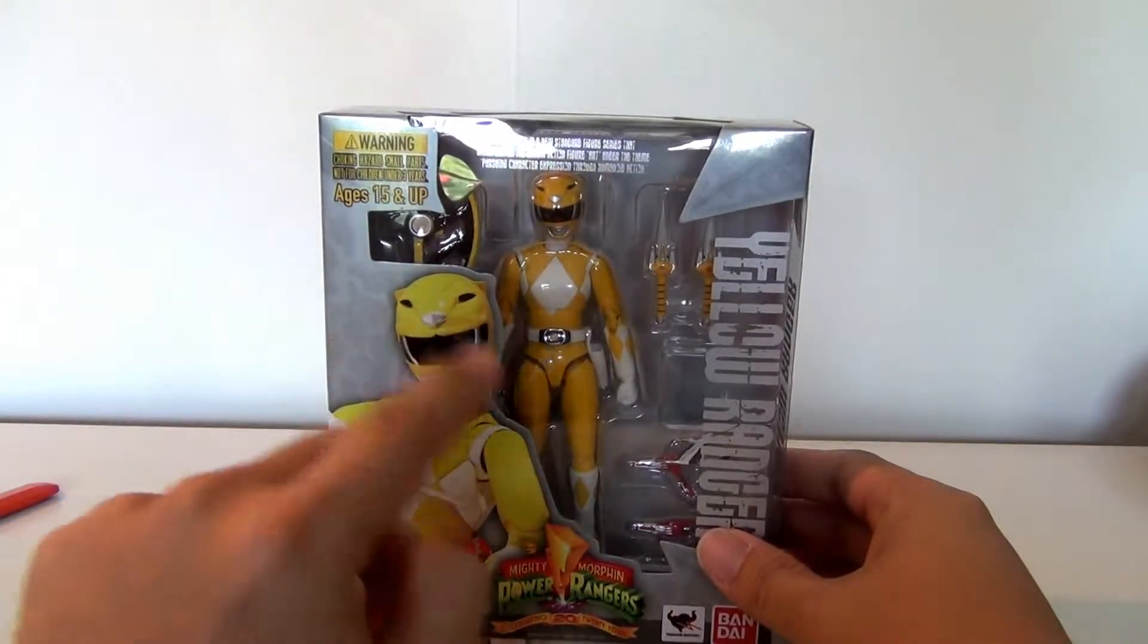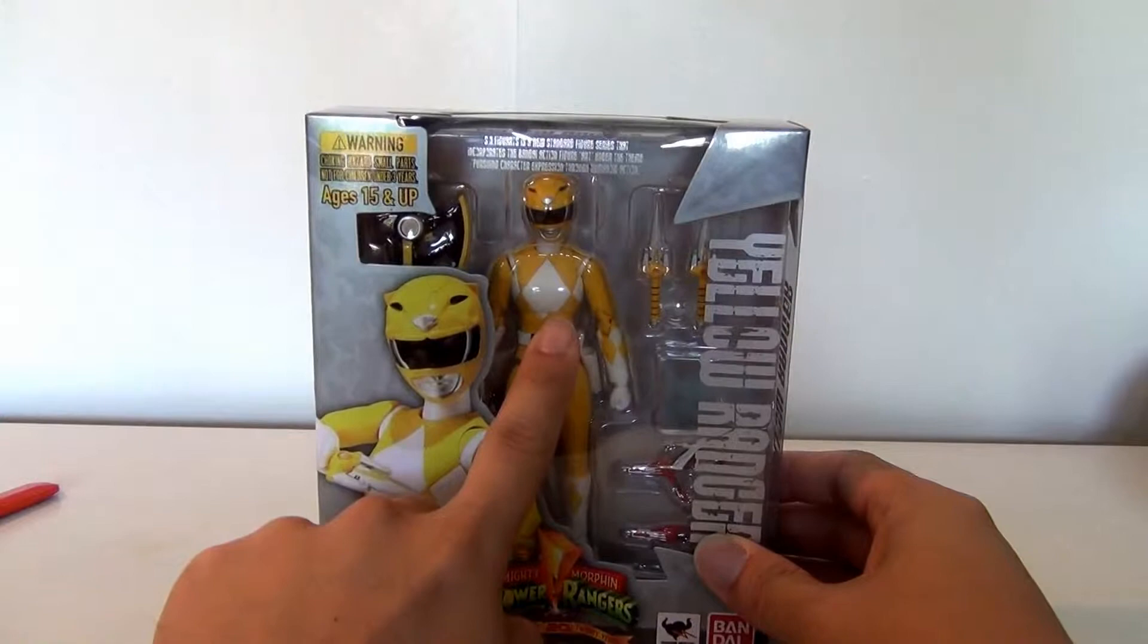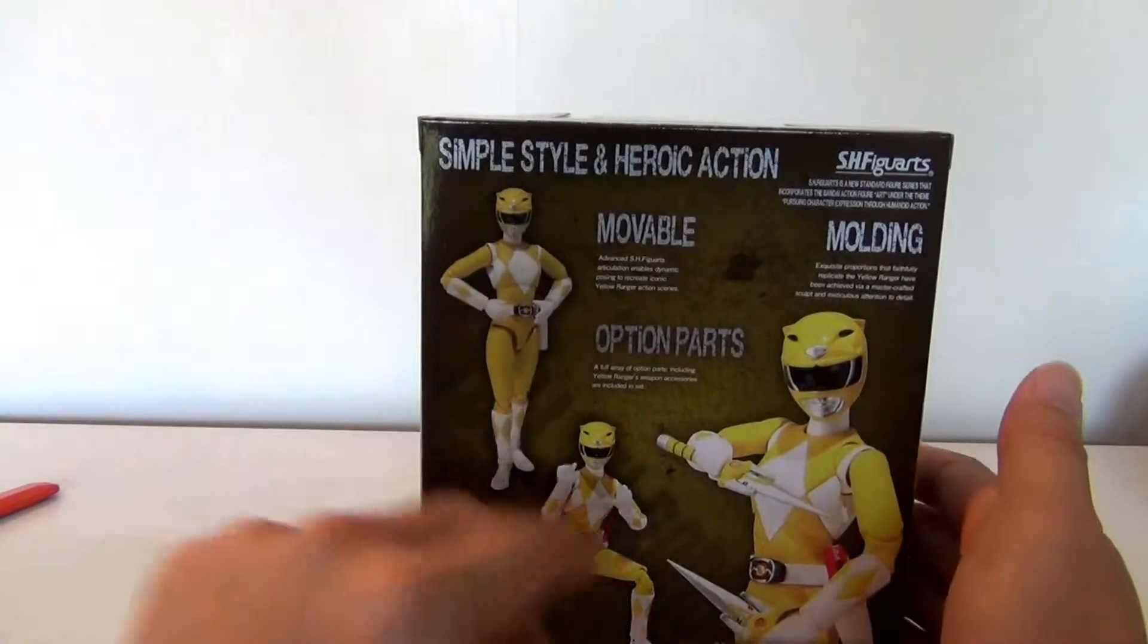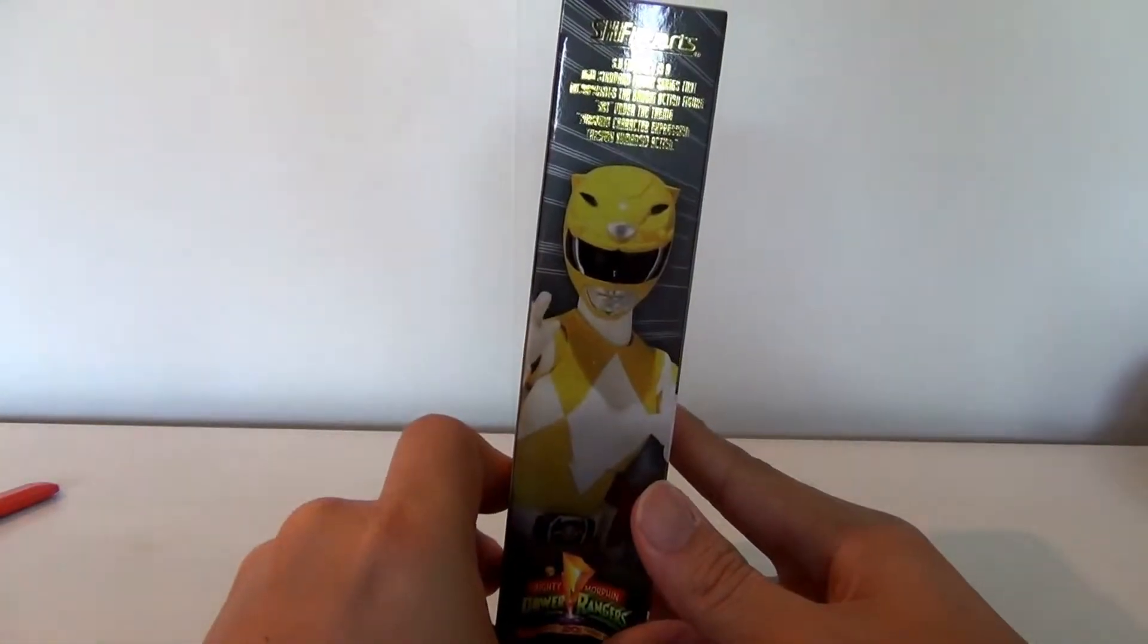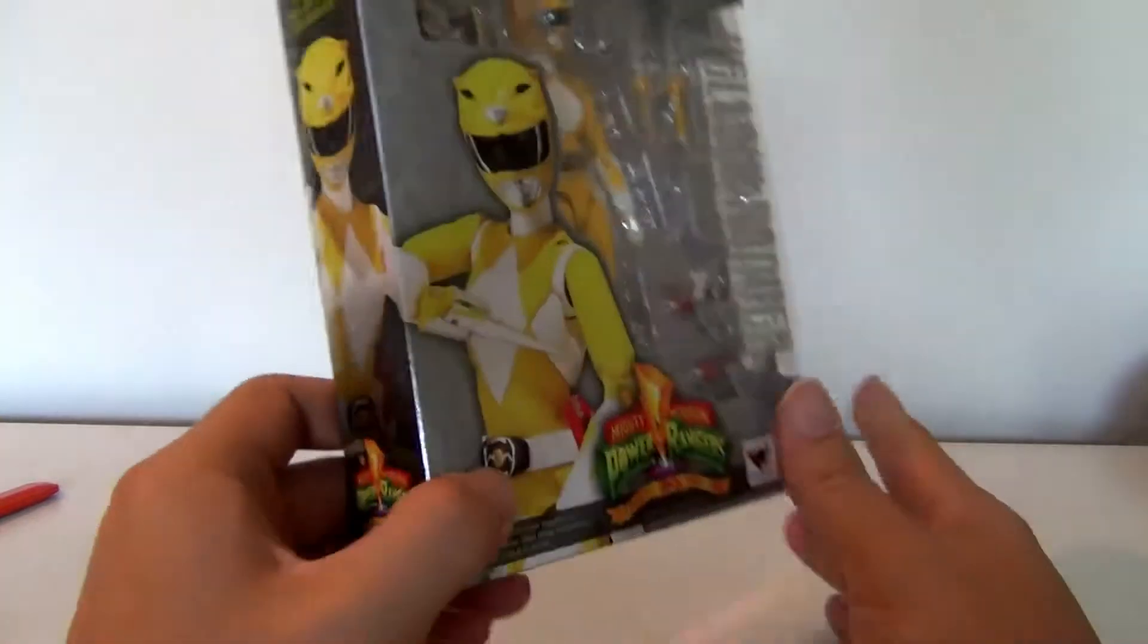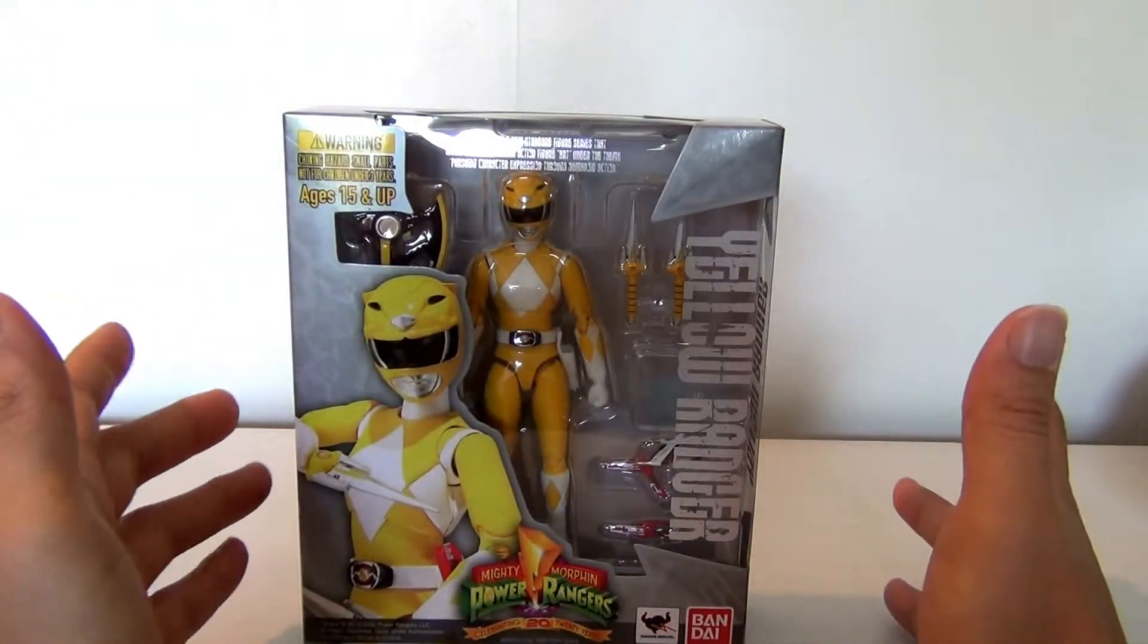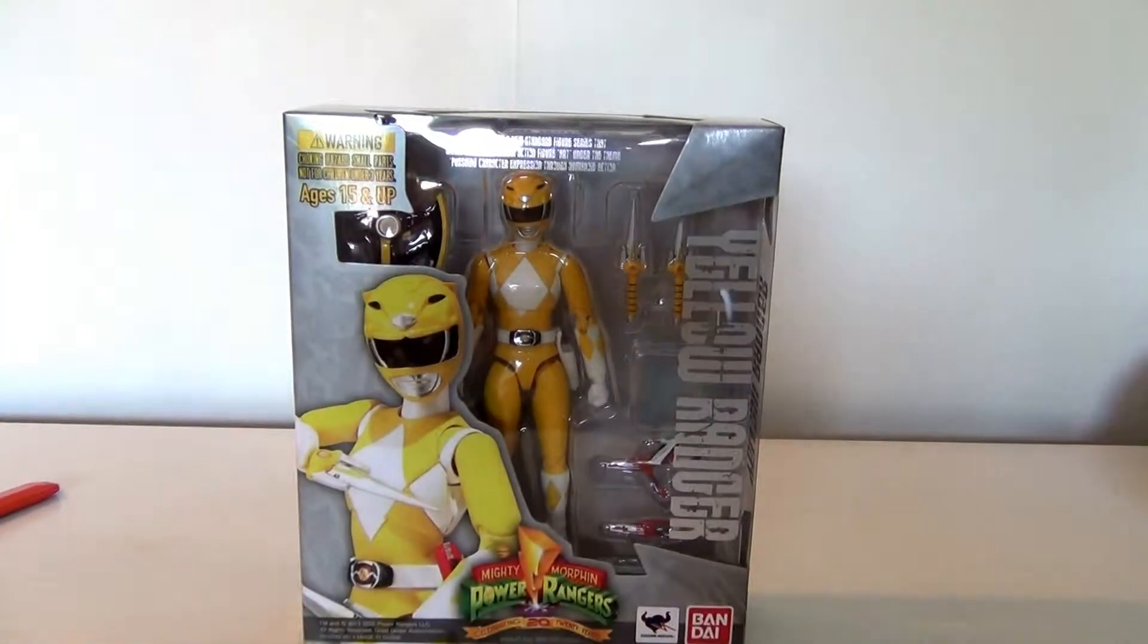Standard packaging as usual. I like the art here and the print of the actual figure. You can see the figure inside, Yellow Ranger going down the side with some poses you could get, and a nice picture of the Yellow Ranger right there. Alright guys, I'm gonna get her out of package and we'll talk some more.